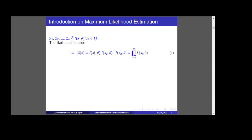The likelihood function, usually denoted by L, is defined as L(θ) = f(x1, θ) · f(x2, θ) · ... · f(xn, θ), which can be written in product form as the product of f(xi, θ) for i = 1 to n. This is equation number 1. Now we need to find the unknown parameter — how to find it.